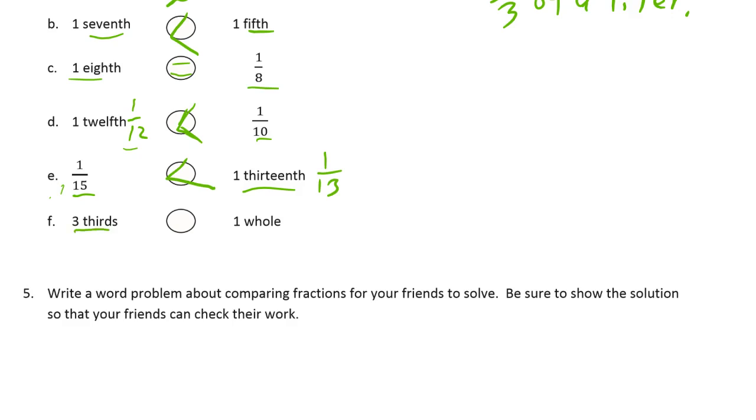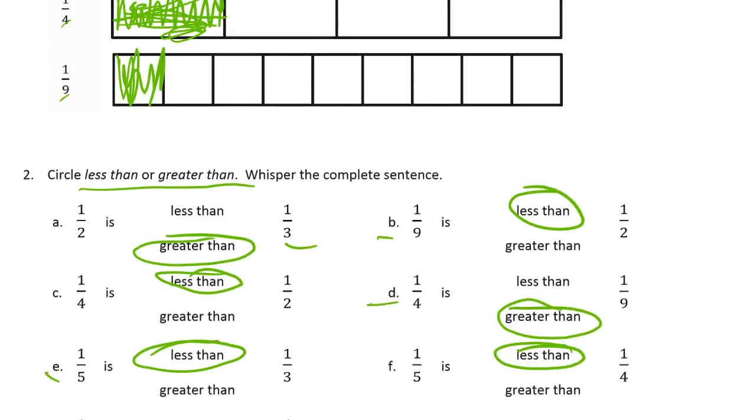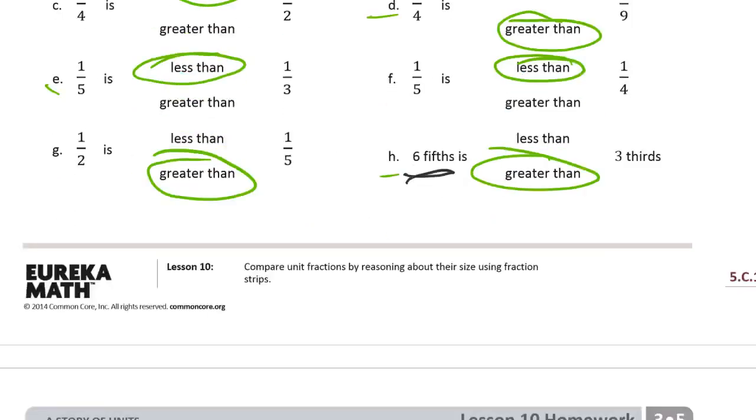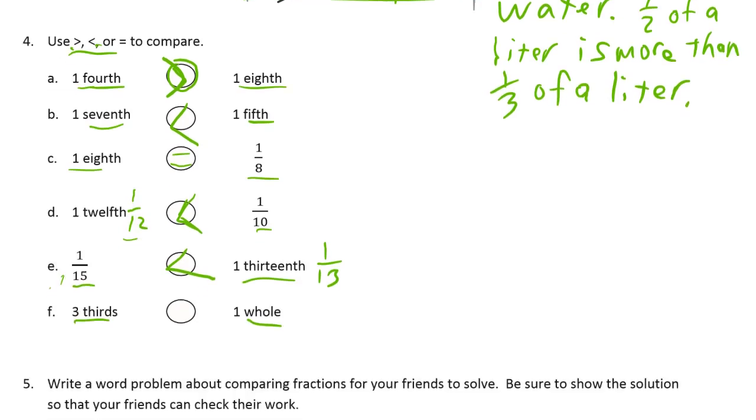Here we have three-thirds and one whole. Three-thirds is the same as a whole. When we looked at this on the first page, we had all three-thirds shaded in. That's the same as one whole strip. We know that's the same. That's equal to a whole. So those are equal.